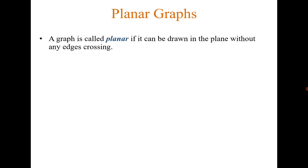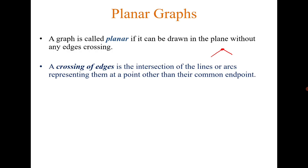Planar graphs: we say that a graph is planar if you can draw it in the plane without edge crossing. Two edges can meet at endpoints, but other than the endpoints, if they are touching each other, we call it a crossing. Crossing of edges is the intersection of lines, arcs, or edges at a point other than their common endpoint.